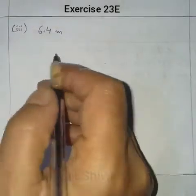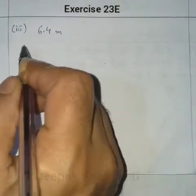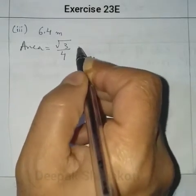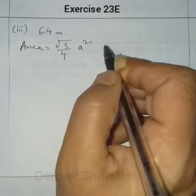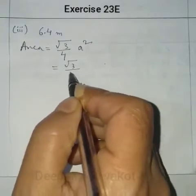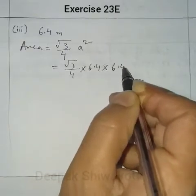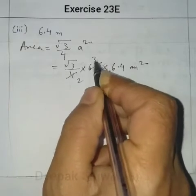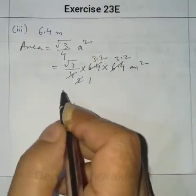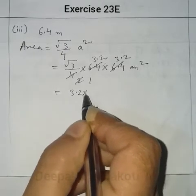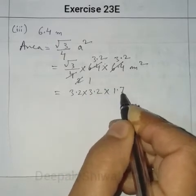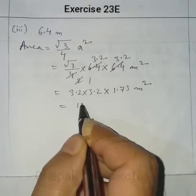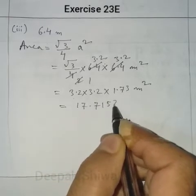Question number 3. Side is given as 6.4 m. The area of an equilateral triangle is (√3 / 4) × a². So Area = (√3 / 4) × 6.4 × 6.4. We can cancel by 2 to get 3.2 × 3.2, then multiply by √3 = 1.73. We get Area = 17.7152 m².